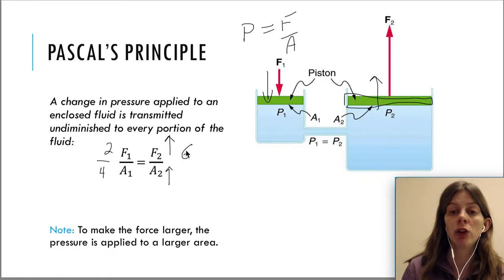We want F2 to be 3 times as big as the original force. Well, what does A2 have to be so that this ratio is equal to 2 over 4, which is 1 half?